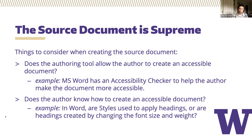A couple of things to keep in mind. Ask yourself: does the authoring tool of the source document allow the author to create an accessible document? Word and PowerPoint do have tools to help content creators make accessible content, and Office does have an accessibility checker to help the author make the document more accessible before being saved as a PDF. You can also ask yourself: does the author know how to create an accessible document? Are they using the styles appropriately to apply headings rather than just changing the font size and the weight?